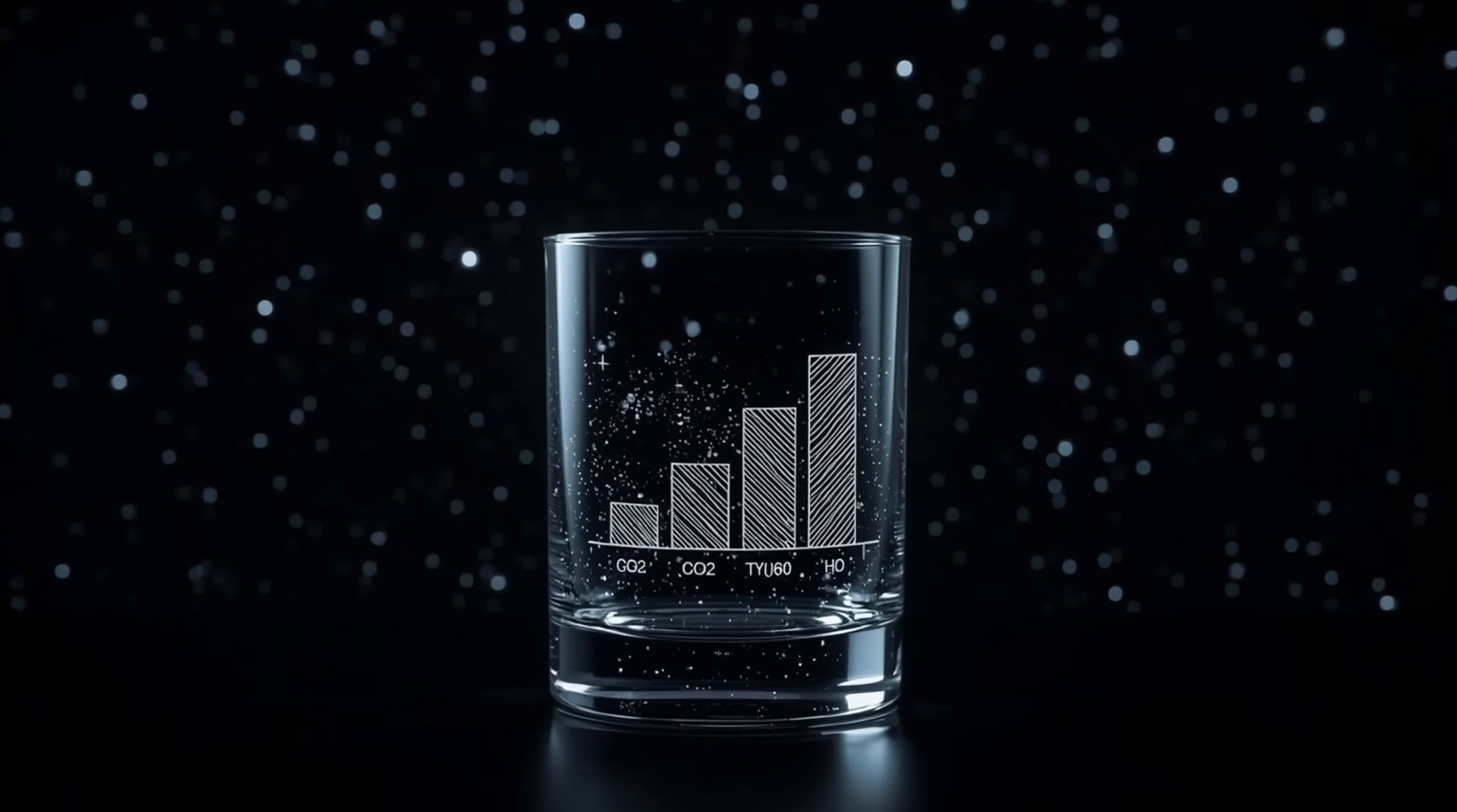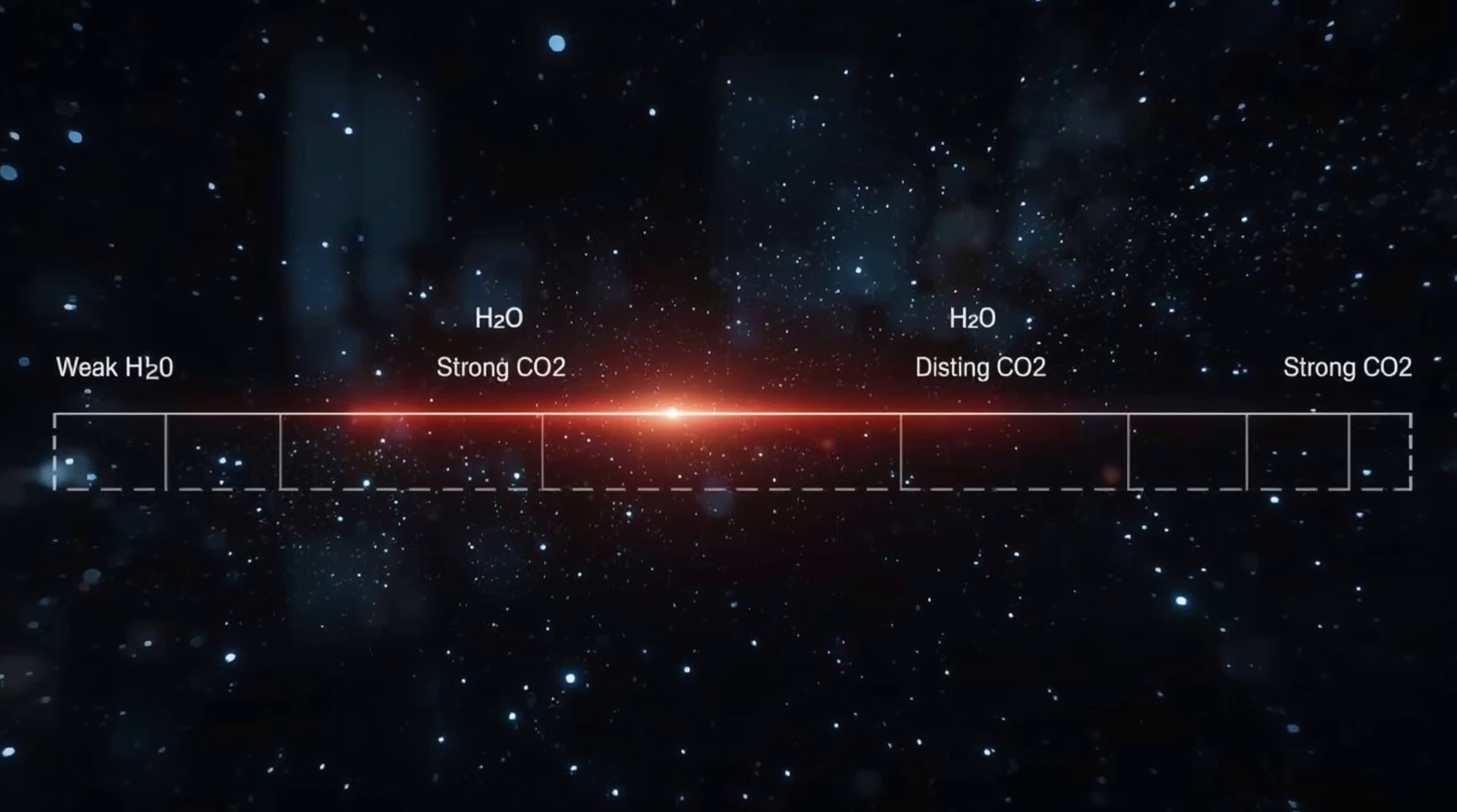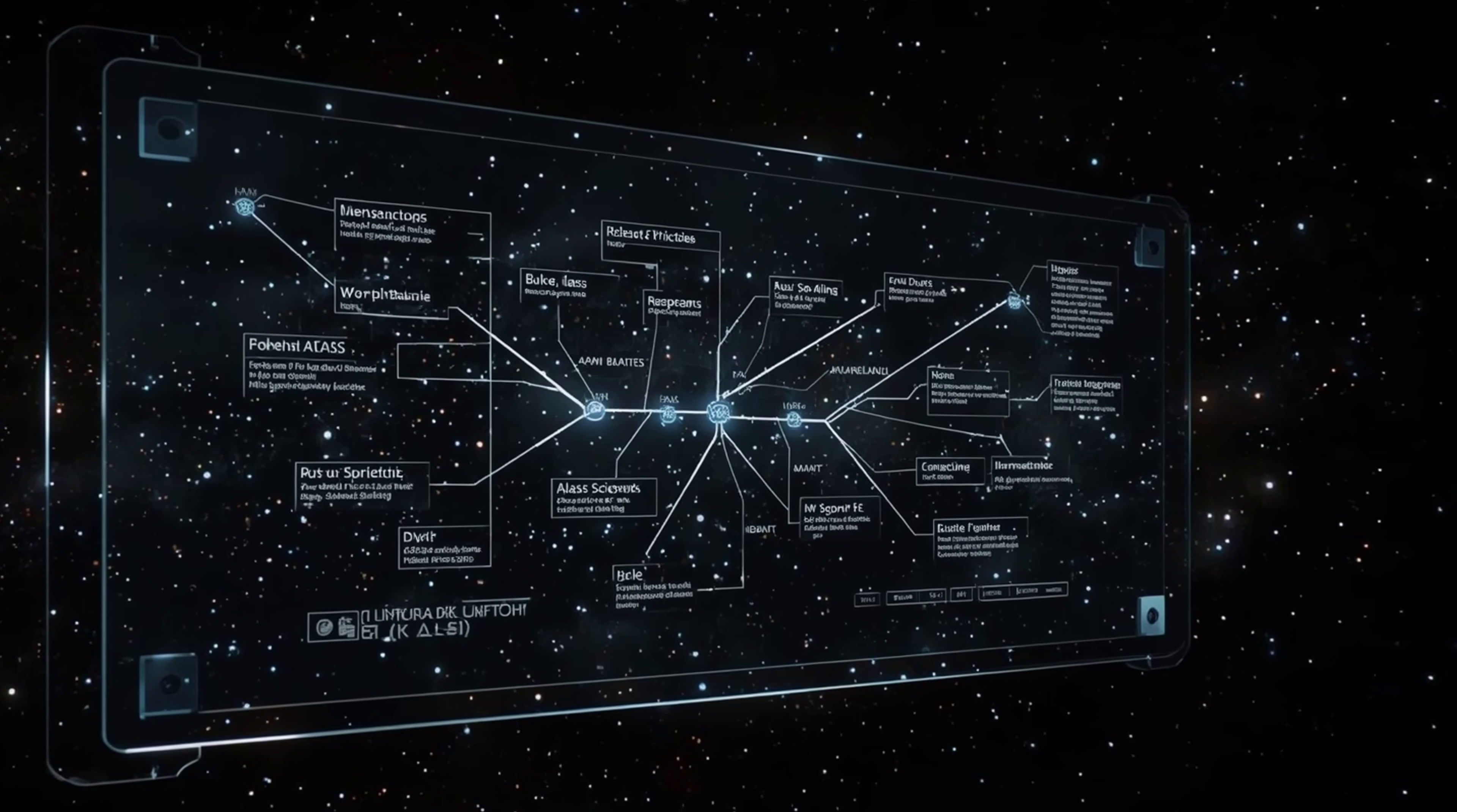The CO2 dominance sets 3i Atlas apart from typical solar system comets, which usually show strong water ice signatures by this distance from the Sun. The weak water features relative to CO2 at 3.3 AU, combined with the massive CO2 coma detected by SPHEREX, point to a composition or thermal history distinct from comets formed in our solar system.